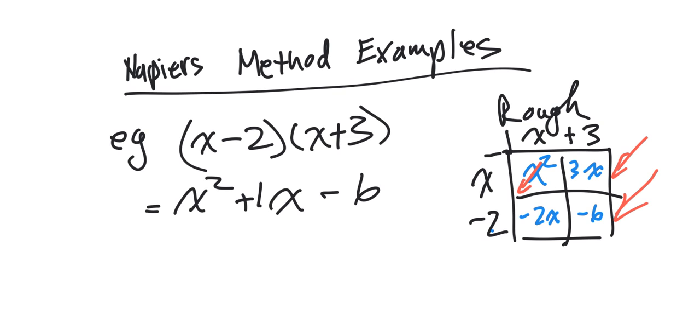And you can do this for even more difficult problems. I'll show you. Here's another example. I have 2x plus 3 and 4x minus 6. So we go over to the side and we write rough. And you'll notice we've got 4 spots.